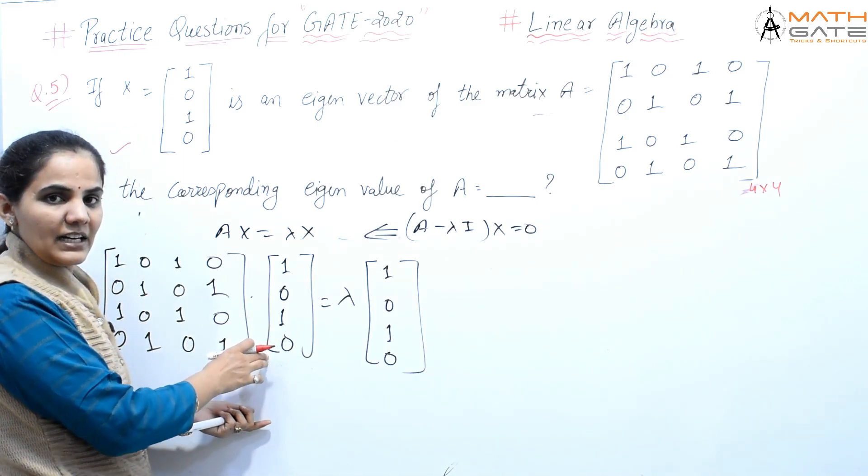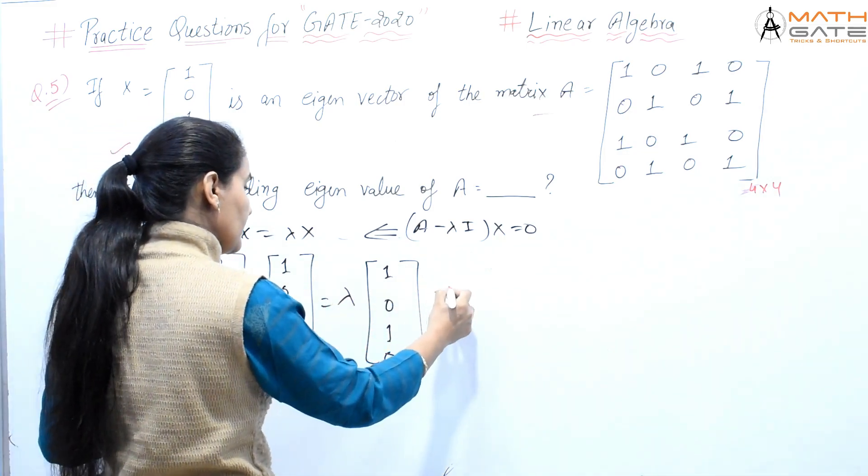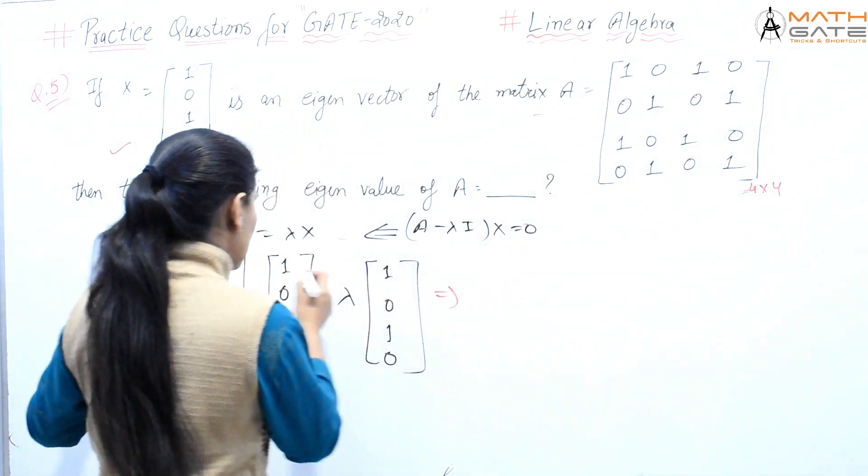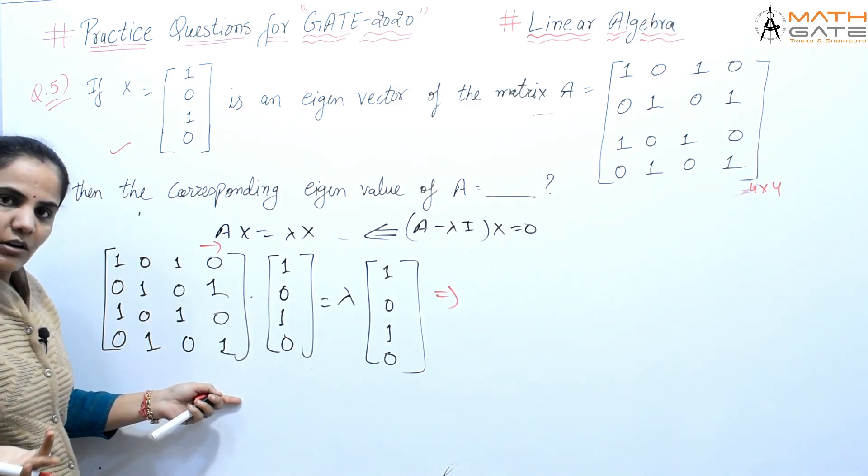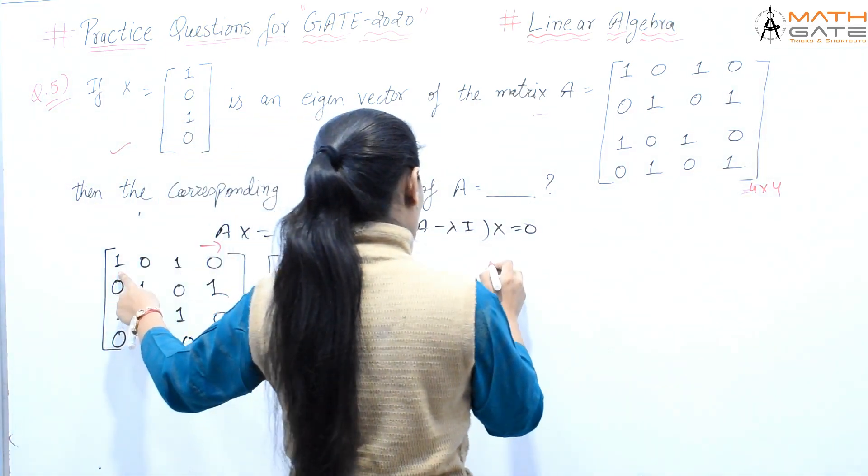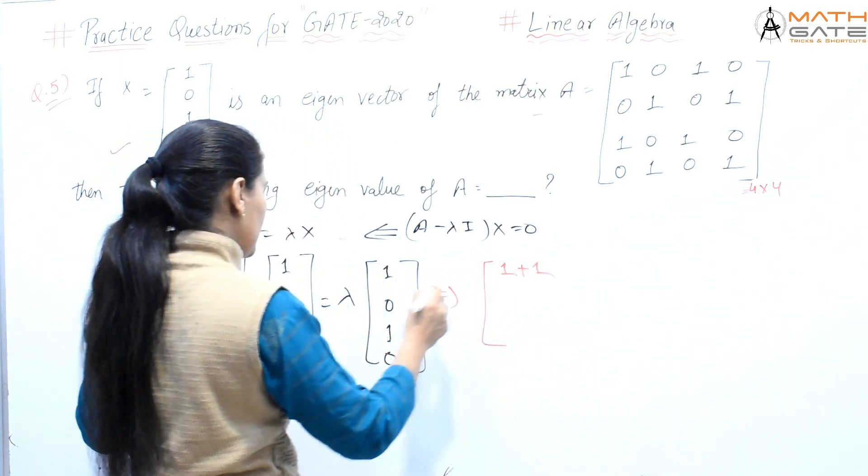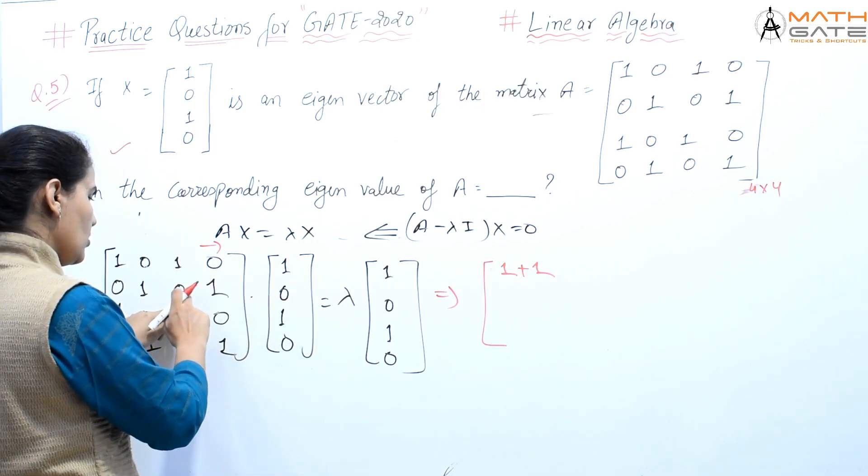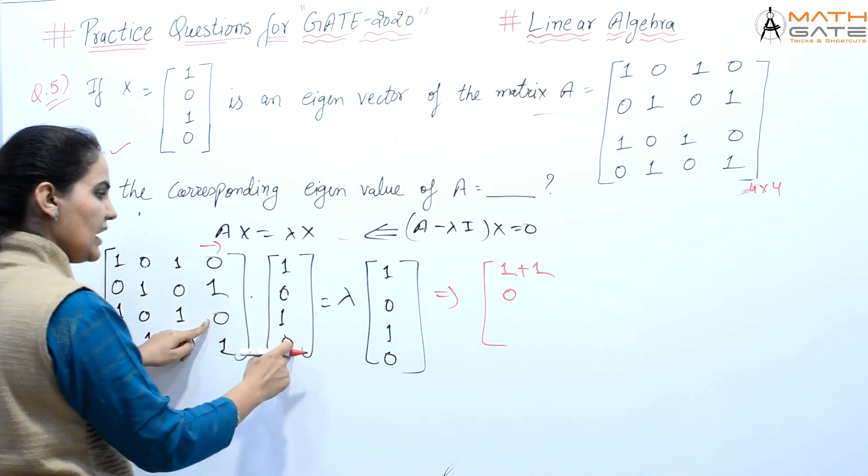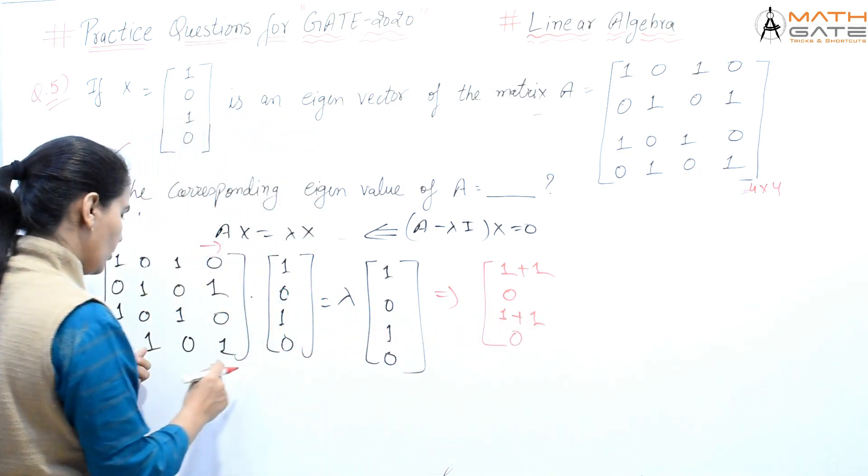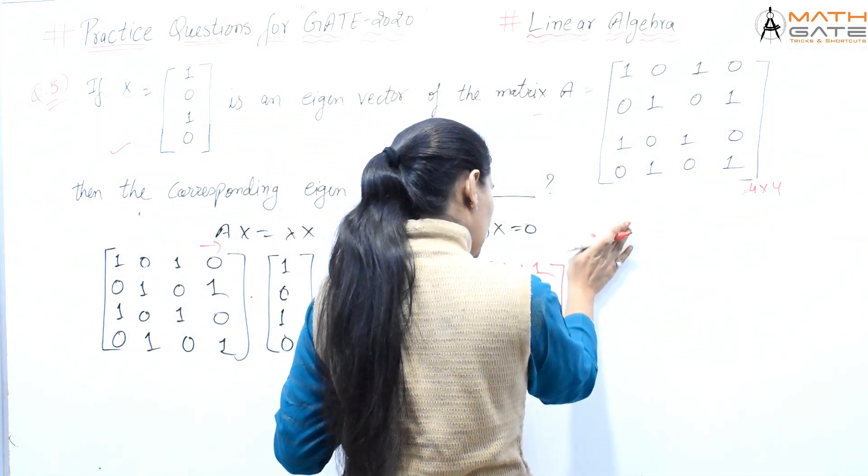This is our question to solve: A×x equals lambda×x. This means by equality of matrices, each and every element of this side would be equal to each and every element of that side. Let's do simple matrix multiplication - this row with this column. First column: first row gives us 1 times 1 is 1, 0 times 0 is 0, 1 times 1 is 1, 0 times 0 is 0, so here 1 plus 1. Second row gives 0, then 0, then 0, so here 0. Third row: 1 times 1 is 1, this is 0, this is 1, and this is 0, so here 1 plus 1.